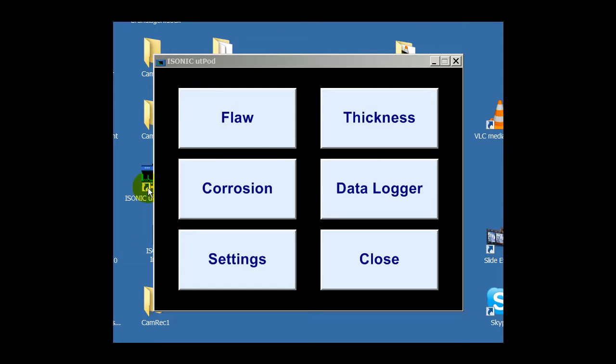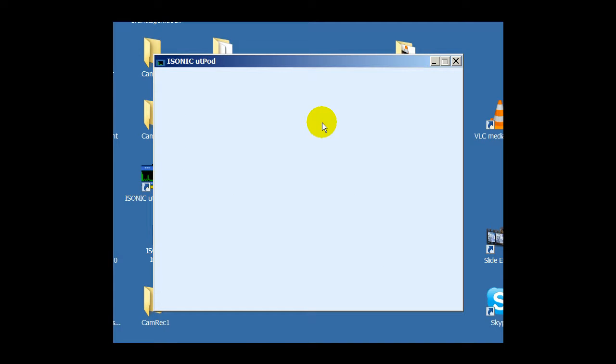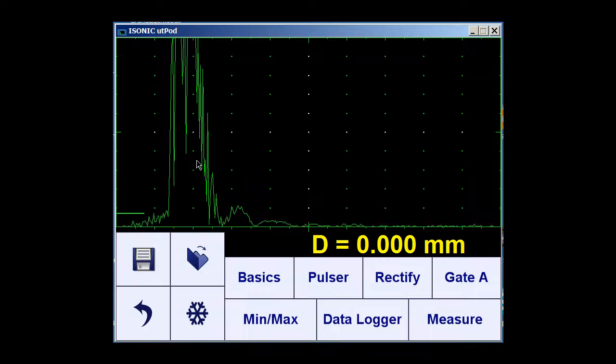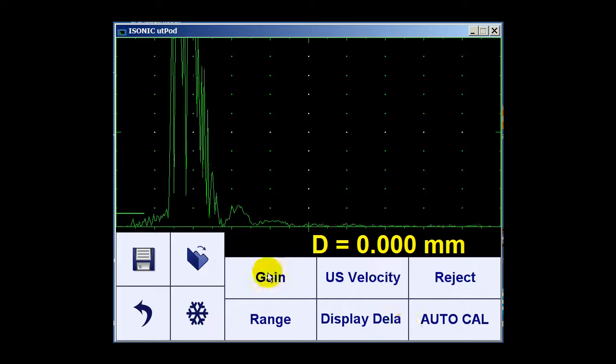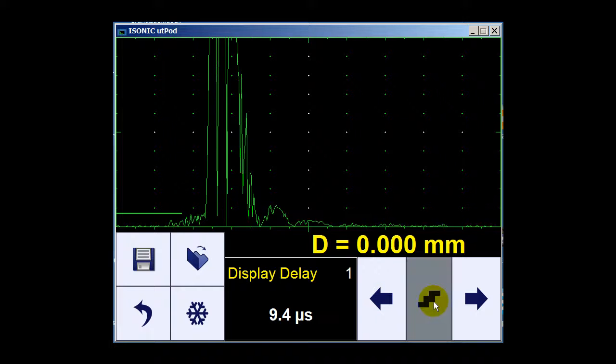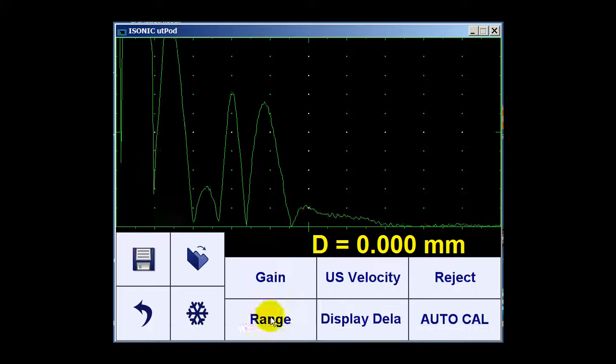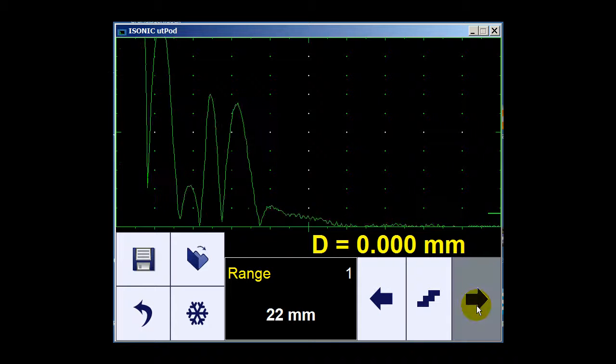First of all, from the main menu we select thickness, then we go to calibration. We have to set the display delay to zero first to make sure that we do the right adjustment right from the beginning.